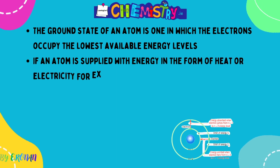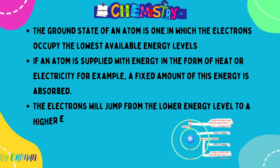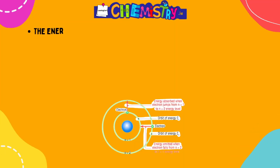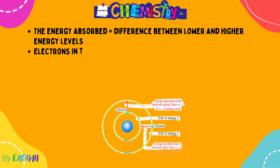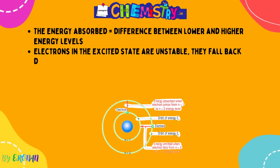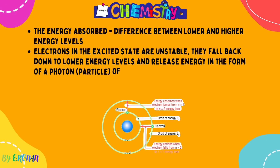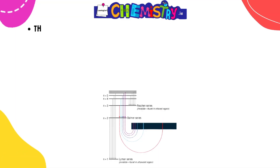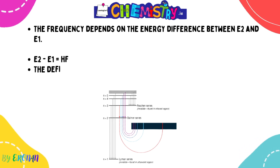The ground state of an atom is defined as one in which the electrons occupy the lowest available energy levels. If we supply an atom in its ground state with energy in the form of heat or electricity, a fixed amount of that energy is absorbed and the electrons move up to a higher energy level — known as the excited state. However, they are not stable there for long. The energy absorbed equals the difference between the lower and higher energy levels. Those electrons in the excited state are unstable, so they fall back to their ground state and release a particle of light known as a photon, which has a fixed amount of energy.